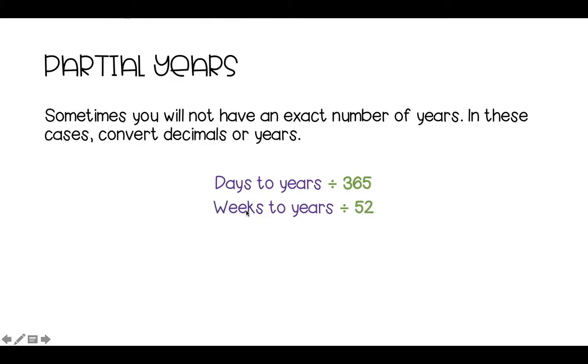Weeks to years, if we've got, you know, 60 weeks, we divide that by 52 to get how many years, and it might be 1.27, something like that. Months to years, you divide the number of months by 12.